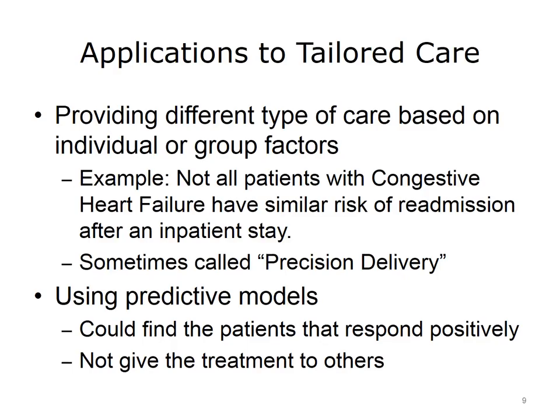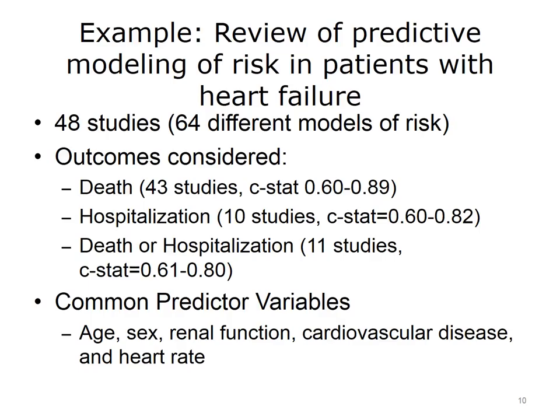Predictive modeling has distinct applications to the notion of tailored care — providing different types of care based on individual or group factors. For example, not all patients with congestive heart failure, or CHF, have a similar risk of readmission after an inpatient stay. This type of application is sometimes called precision delivery. Using predictive models, we could find the patients or group of patients that respond positively and not give the treatment to others. In a review of predictive modeling for patients with heart failure, Rahimi and colleagues looked at 48 published studies using 64 different models of risk. The outcomes were either death, hospitalization, or the combination of death or hospitalization.